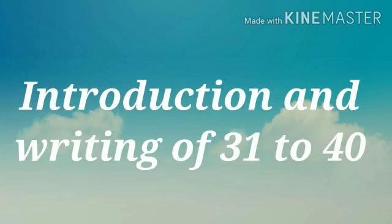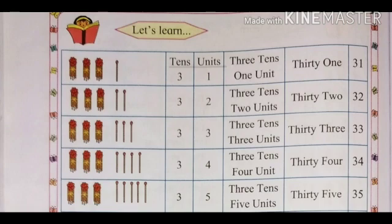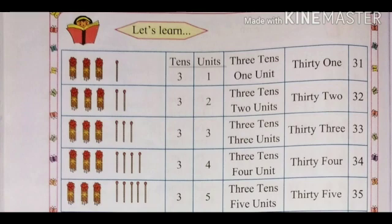Introduction and writing of 31 to 40. Let's learn — 3 bunches of math sticks are there, that is 30 math sticks. With 1 math stick: 31. Three bunches means 3 tens, and 1 math stick means 1 unit — 3 tens and 1 unit, that is 31. The spelling of 31 is T-H-I-R-T-Y (30) O-N-E (1): 31.